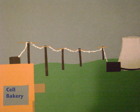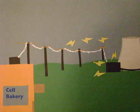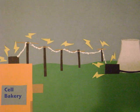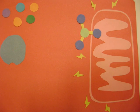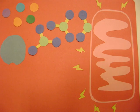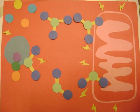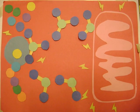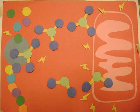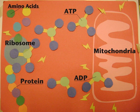Now, an oven needs power to operate. The cell bakery gets its power from the local power plant. In the cell, the energy for the process of protein synthesis comes from the mitochondria, also known as the powerhouse of the cell. Here is a process of translation inside a cell in motion.